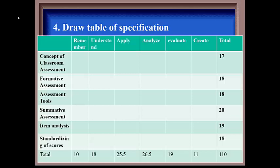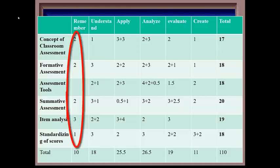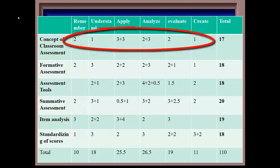Let us distribute the marks across the units and level of thinking as shown in the table. When we distribute the marks, we have to look at the total. For instance, when we add all the marks in first column, we will get total 10. And when we add all the marks in first row, we should get 17.